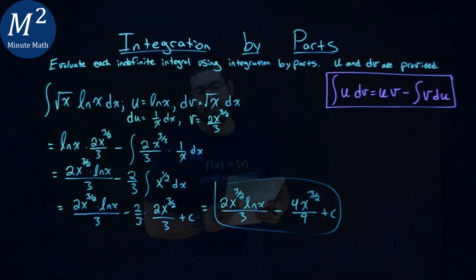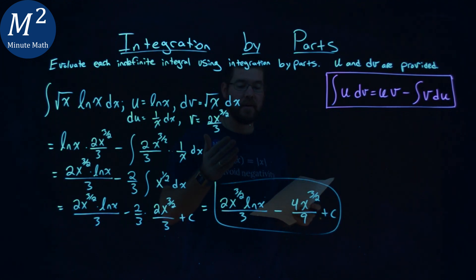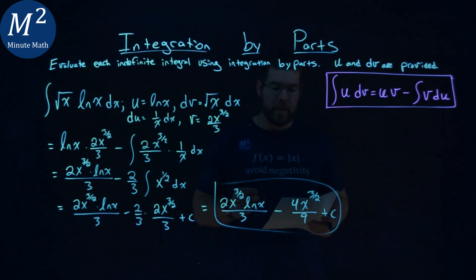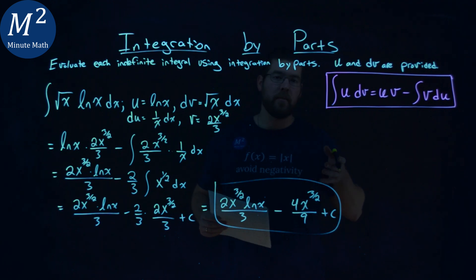So, our final answer here is 2 times x to the 3 halves power natural log of x divided by 3, minus 4 times x to the 3 halves power over 9, plus c.